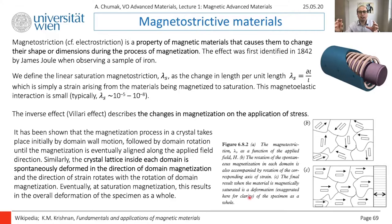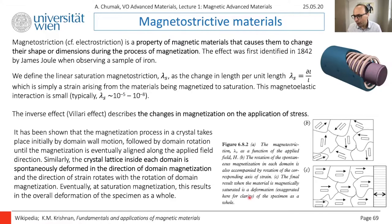Since spin does not directly couple to the lattice, you need a physical mechanism to couple magnetism — related to electron spin — to the electron orbit. Because orbit, when it rotates, already feels the orbitals of neighboring atoms. Therefore, crystallography is coupled directly to the orbit of the electron. Spin-orbit interaction couples spin to orbit, and orbit is sensitive to crystallography. This is the basis of crystallographic anisotropy.